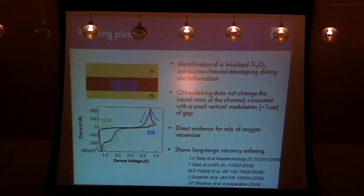Okay, so the resulting picture that we have: we started off with a junction with amorphous titanium dioxide switching material. In the electroforming step, we formed this conductive channel. We were able to identify both the stoichiometry and the structure of this conductive channel to be a Ti4O7 Magnéli phase crystal. We saw that subsequent on-switching doesn't change the area of the device, at least in the lateral dimension. So this is consistent with the picture that Stan described of on-off switching being some kind of vertical modulation of a very small gap size. So we've got nice direct evidence for the role of oxygen vacancies in the operation of these devices. And as a surprise, we saw that there was an actual long-range ordering in these vacancies.